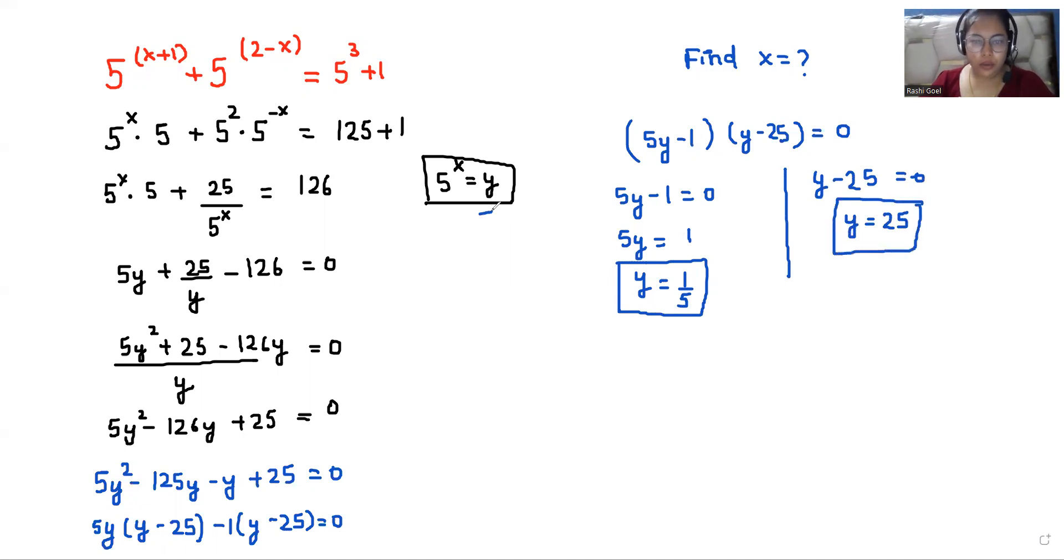Now we know that we replaced y with 5^x. That means 5^x equals 1/5 from this case, or we can write it as 5^x equals 5^(-1), so x equals -1.